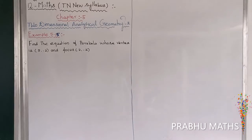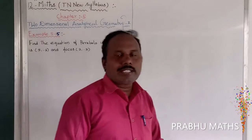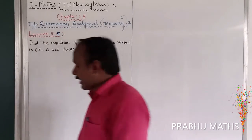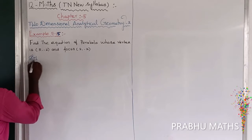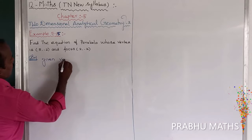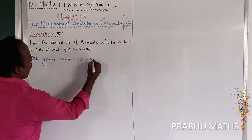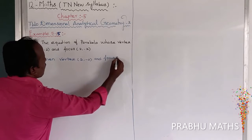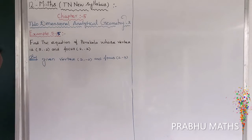Example 5.15: Find the equation of the parabola whose vertex is (5, -2) and focus is (2, -2). The given information is: Vertex = (5, -2) and Focus = (2, -2).